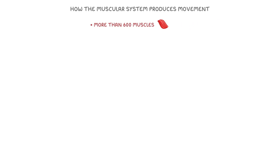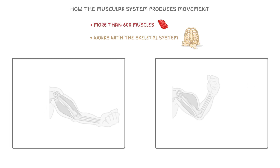Let's start by looking at how the muscular system produces movement. There are more than 600 muscles in the muscular system. Importantly, the muscular system works with the skeletal system, which is just all the bones in the body. Let's take a closer look at how this happens.